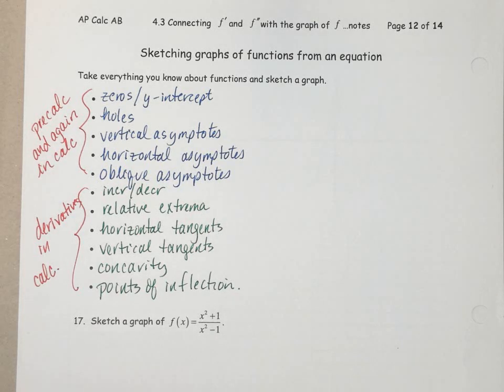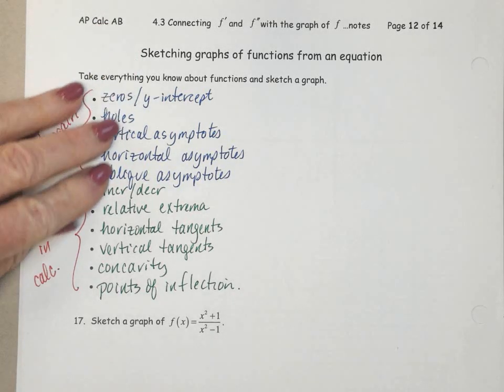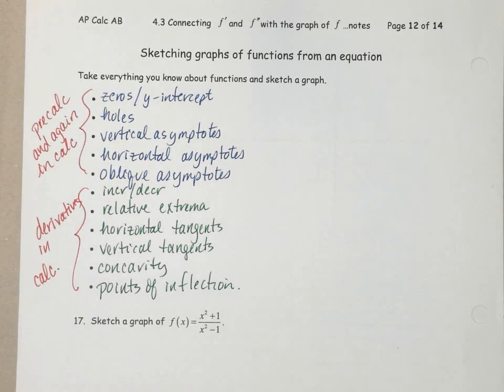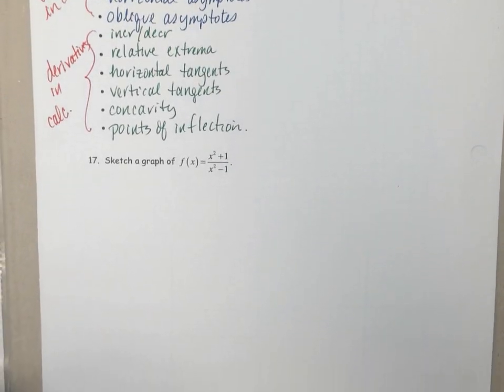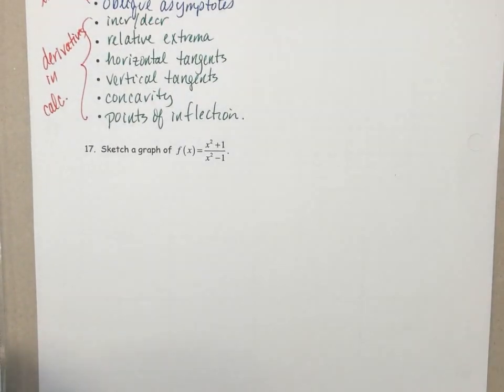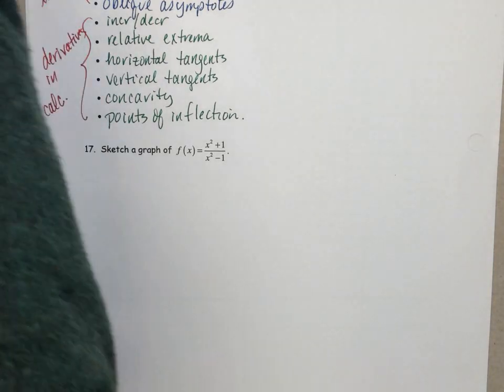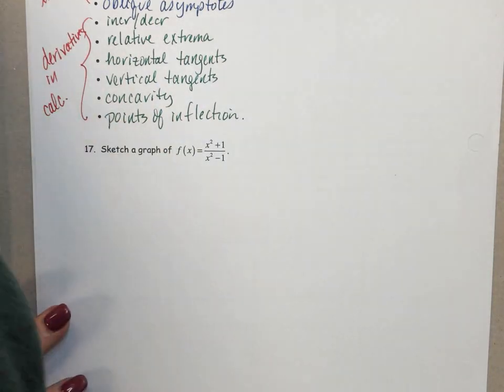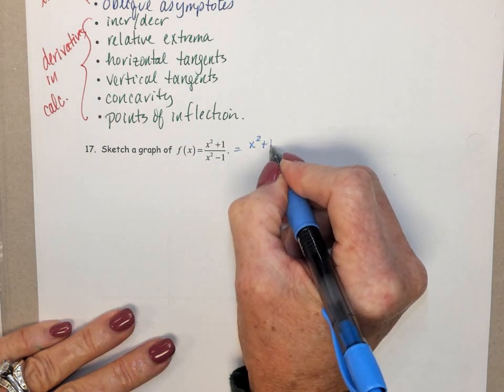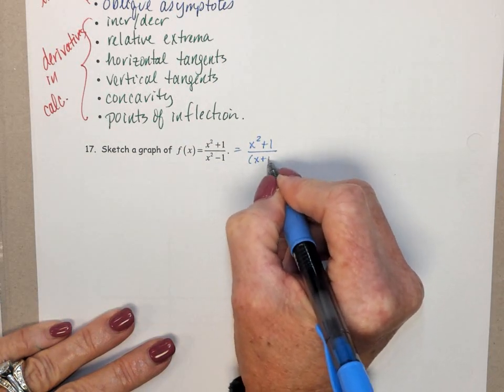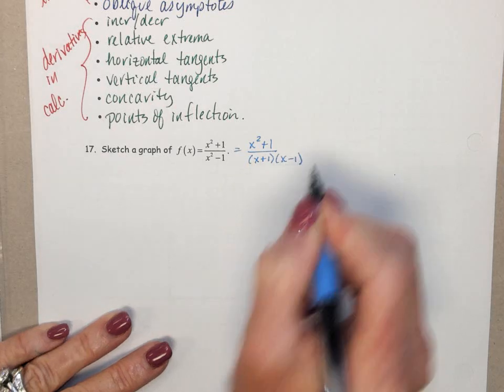Again, we're going to take all this stuff that we know, find all this information about this function, and then sketch a graph. So, looking at this f(x) equals x squared plus 1 over x squared minus 1. Very definitely, we can factor the denominator into x plus 1 times x minus 1.